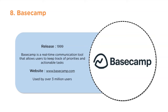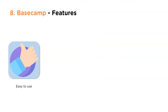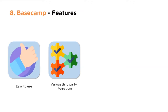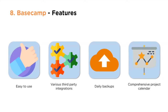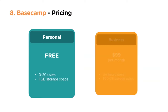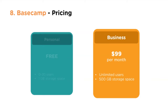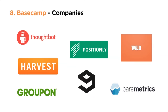Basecamp was released in 1999. It is a real-time communication tool that allows users to keep track of priorities and actionable tasks. The website is www.basecamp.com, used by over 3 million users. Features include ease of use, various third-party integrations, daily backups, and a comprehensive project calendar. The personal version is free for 0 to 20 users with 1 GB storage. The business version is $99 per month for unlimited users with 500 GB storage.